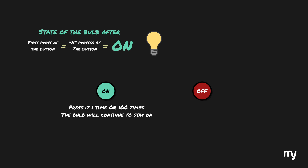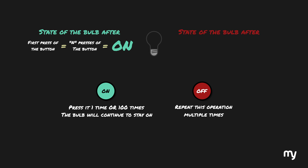If you press the off button, the bulb will switch off. And if you repeat this operation multiple times, nothing will happen — the bulb will continue to stay off. Again, the state of the bulb after the first press and after pressing this button n times is exactly the same. This is precisely what idempotence is about.